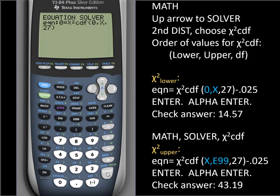Now it's pasted into our equation solver and we need to now subtract the area that's between zero and X. So we'll subtract 0.025 and hit enter. We're not done yet because we need to press alpha and solve, which tells the calculator to solve for that value. And we get 14.57.